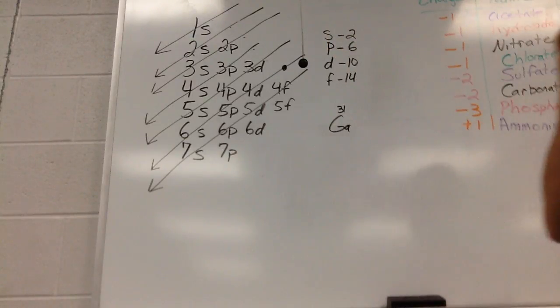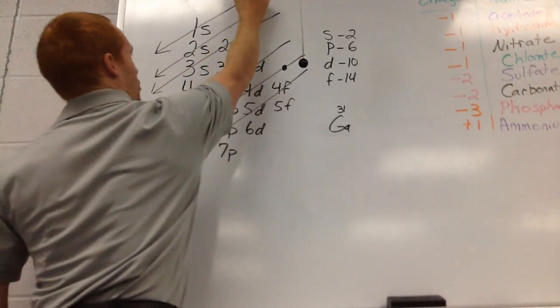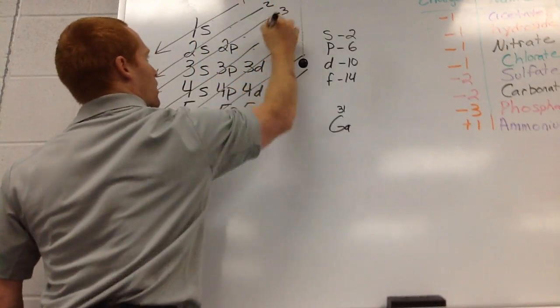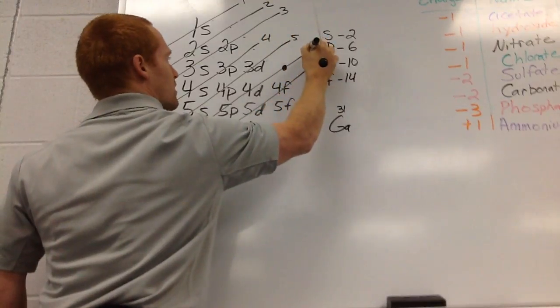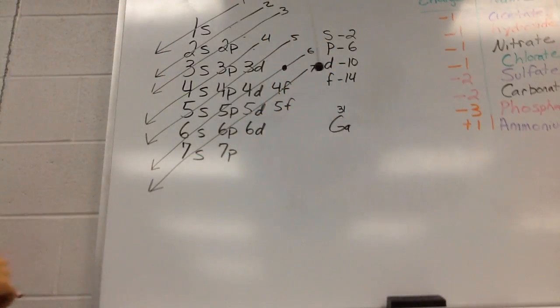So we need our exponents to add up to 31. What we're going to do is we're going to start with our first arrow. So this is arrow 1, 2, 3, 4, 5, 6, 7. Okay, so these are our arrows.